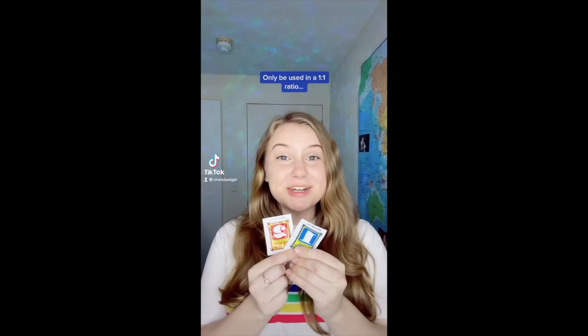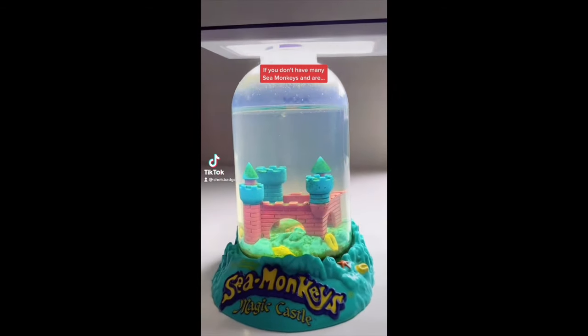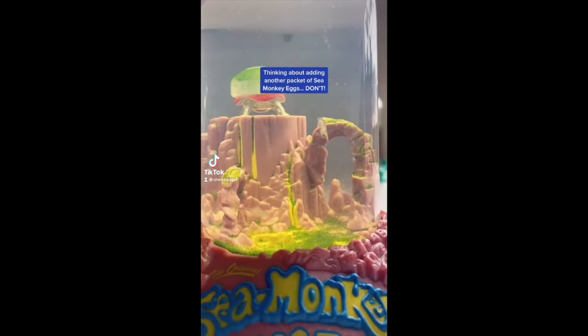Sea monkey kits are designed to only be used in a one to one ratio, which means if you add another packet number two there's a good chance your sea monkeys will die. Because this sachet contains eggs and something else that they call a magic crystal powder. And here's the receipts. If you don't have many sea monkeys and are thinking about adding another packet of sea monkey eggs, don't.